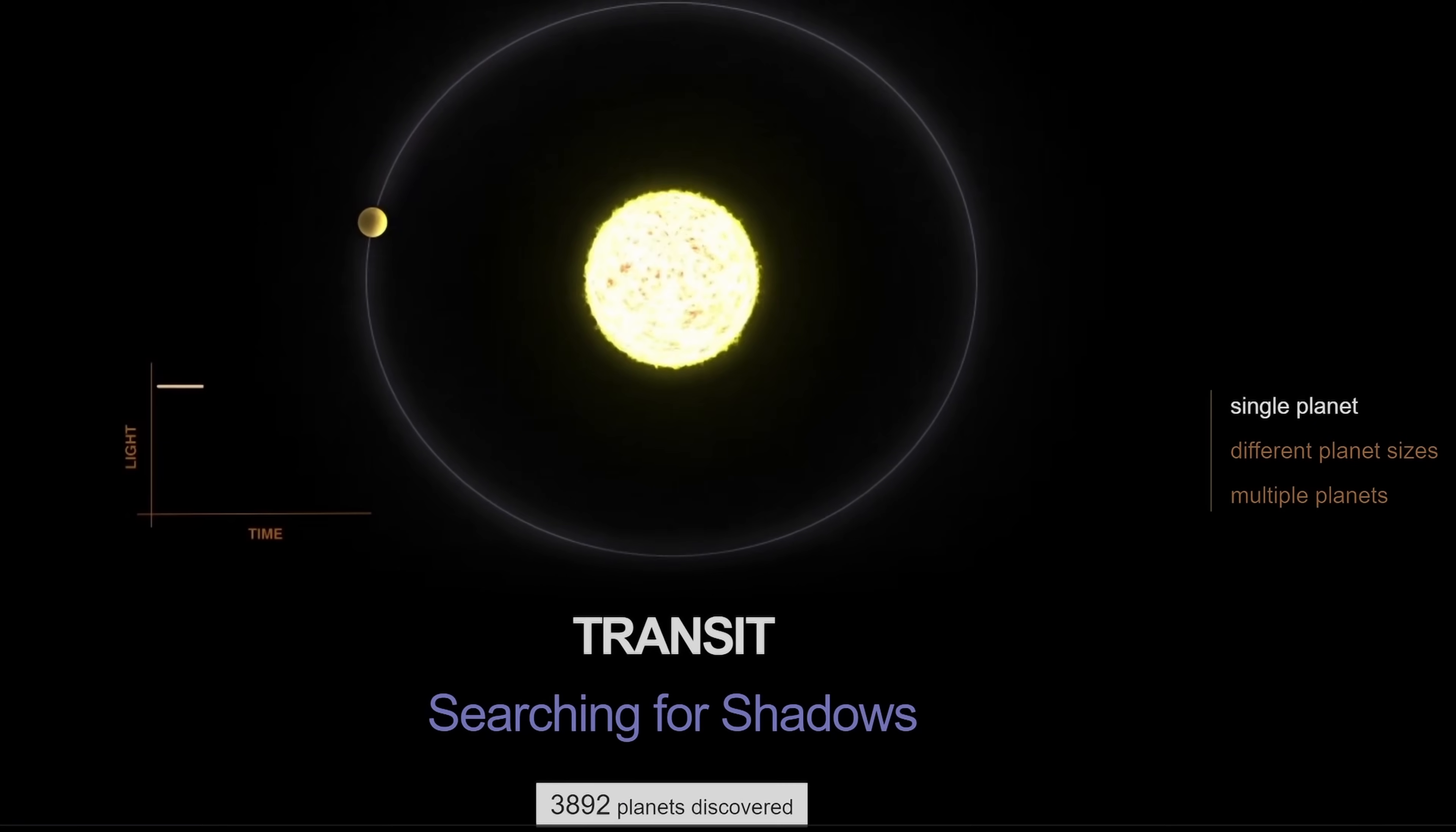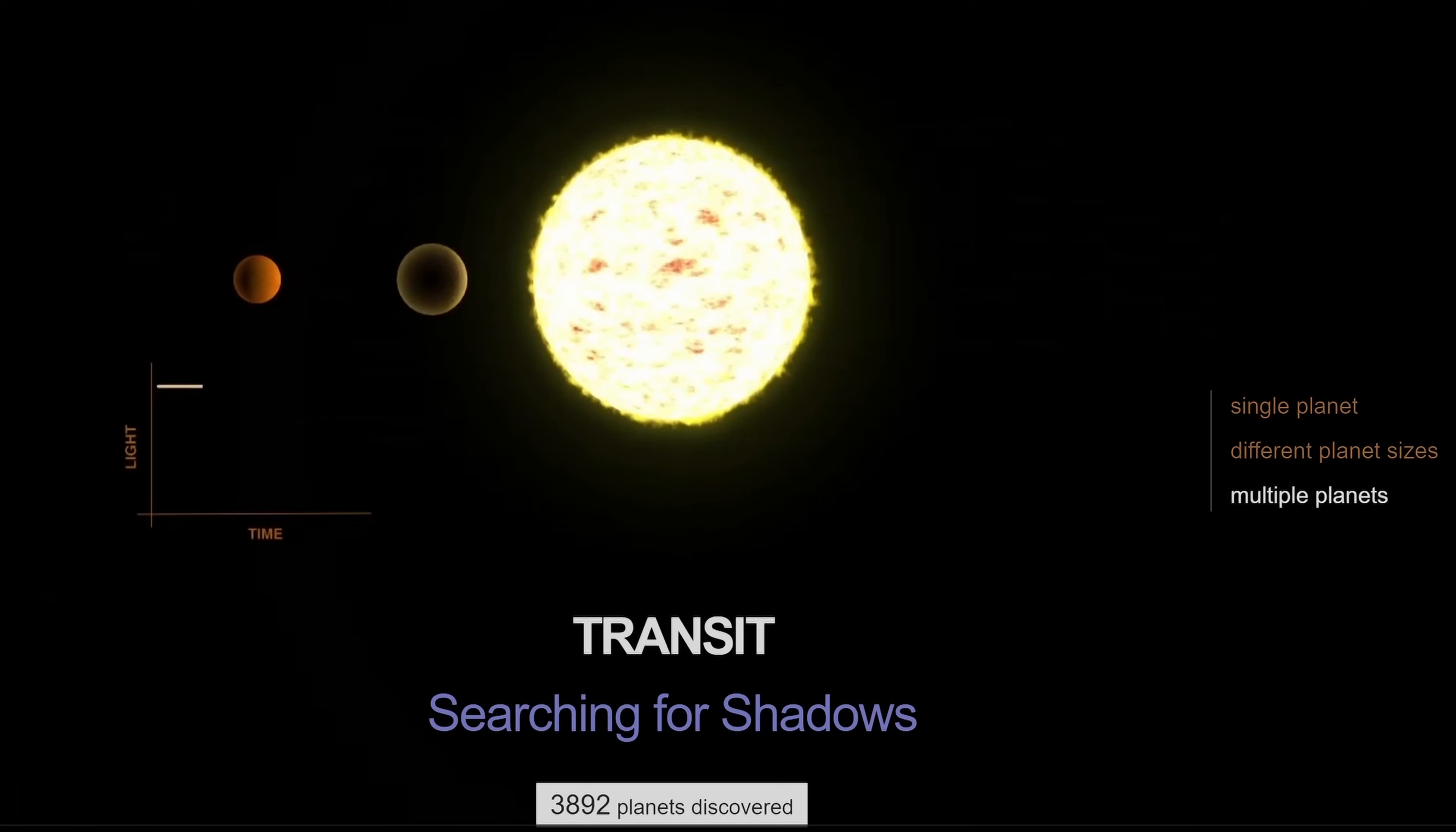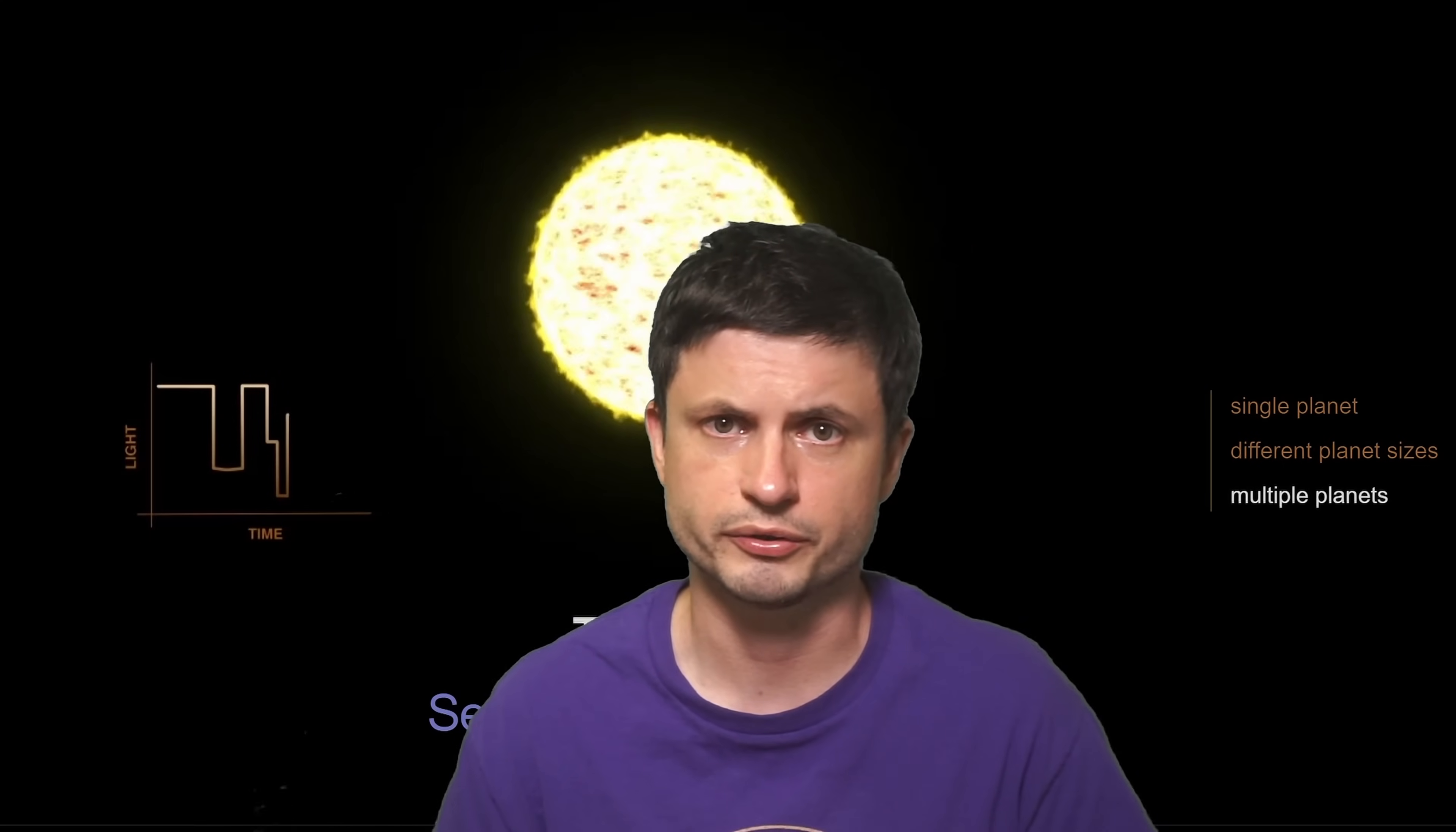When it comes to finding these planets, two methods have been used very successfully to discover the vast majority. The most successful method is known as the transit. That's essentially when we're looking at the star and trying to discover a tiny shadow passing in front of it. Over the years, some stars revealed quite a lot of different planets, allowing us to find several thousand different candidates.